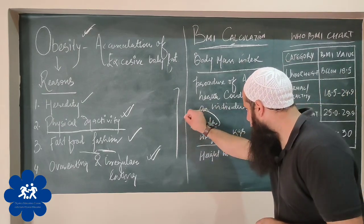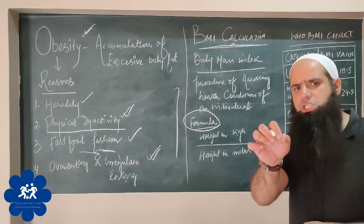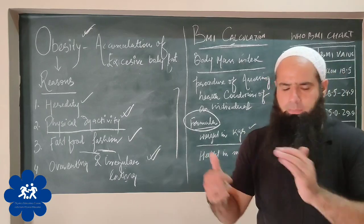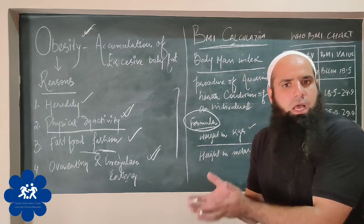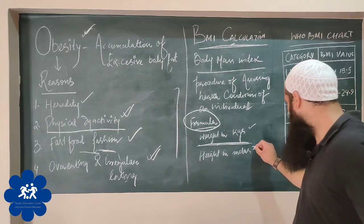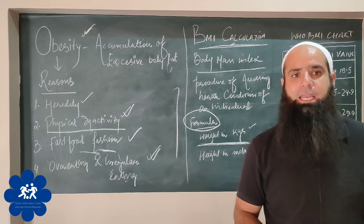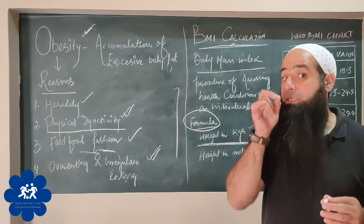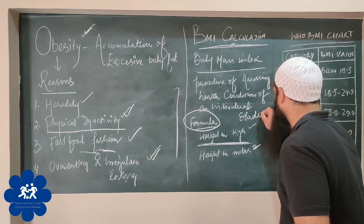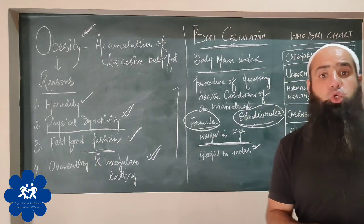For BMI calculation, there is a formula that has been adopted and designed: weight in kilograms divided by height in meters squared. First, we measure the individual's weight using a weighing machine — the person steps on the weighing machine and the weight is recorded. The second step is to measure height in meters. You can use a measuring tape, or more precisely, the technical equipment used for this is called a stadiometer — the equipment used to measure the height of an individual.